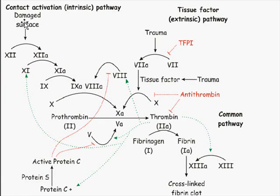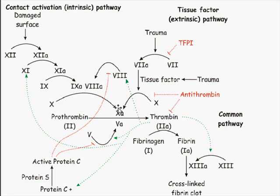The intrinsic pathway starts when there's a damaged surface, and therefore factor 12 is activated. Activated factor 12 activates factor 11, which then converts factor 9 into activated factor 9. Combined with activated factor 8, this converts factor 10 into factor 10A. Factor 10A then converts prothrombin into thrombin, and thrombin converts fibrinogen into fibrin, which can then become cross-linked. That's the intrinsic pathway.